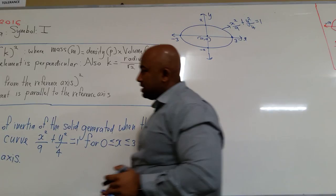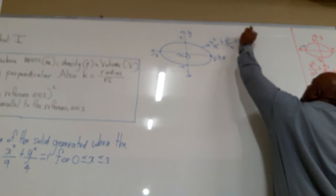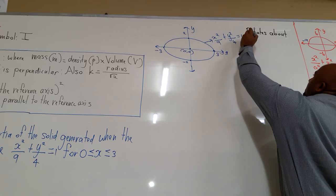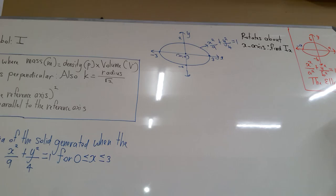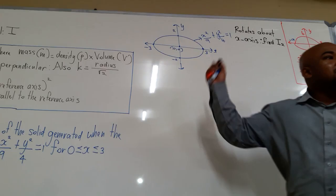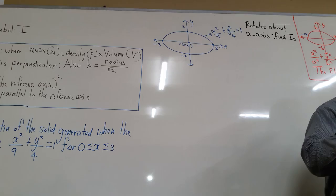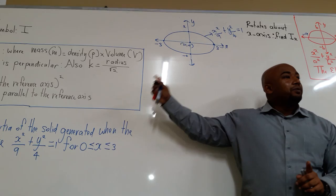The question states the area rotates about the x-axis. So the x-axis is your reference axis — it is the axis of rotation. If the question stated rotates about the y-axis, then you would be finding Iy. Now, the formula we use depends on whether we are using delta x or delta y.